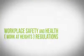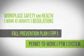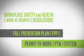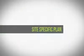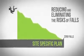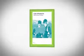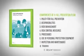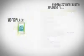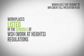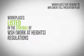Under the WSH Work at Heights Regulations, a Fall Prevention Plan (FPP) and Permit-to-Work (PTW) system will need to be implemented. A fall prevention plan is a site-specific plan prepared to reduce or eliminate the risk of falls. As stated within the approved Code of Practice for Working Safely at Heights, a fall prevention plan is made up of 10 components to help address the falling from height hazards comprehensively. The occupier is required to implement the FPP for workplaces listed in the schedule of the Workplace Safety and Health Work at Heights Regulations.